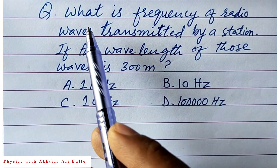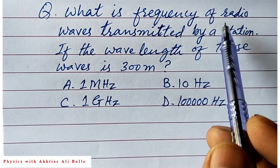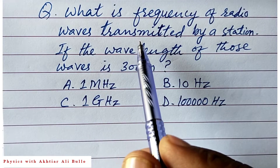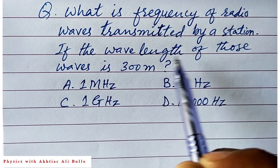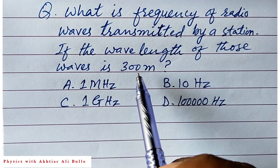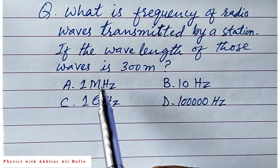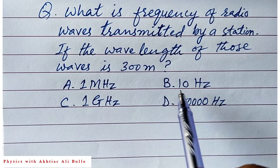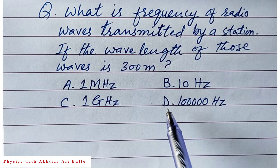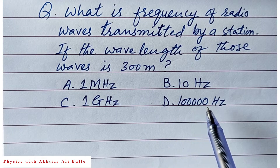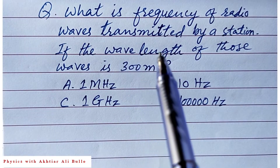The question is: what is the frequency of radio waves transmitted by a station if the wavelength of those waves is 300 meters? Option A: 1 megahertz, B: 10 hertz, C: 1 gigahertz, D: 1 lakh hertz. We have to calculate the frequency of the radio waves.